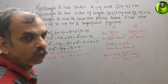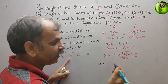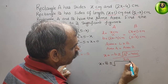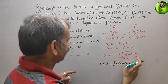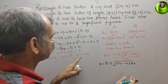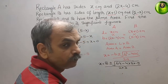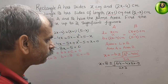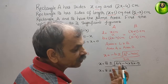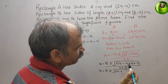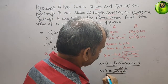Now substitute these values. We get x equals minus b, that means minus of minus 8 is 8, plus or minus root under b squared — minus 8 squared is 64 — minus 4 into a, which is 3, into c, which is minus 5, all over 2 into 3. Minus times minus is plus, so we get 64 plus 60, which is 124, over 6.